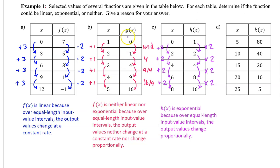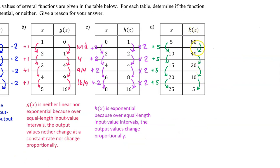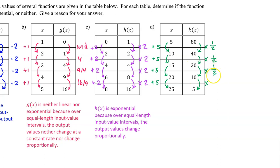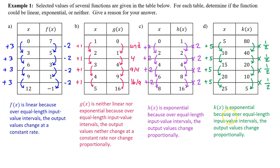By the way, on Part B the function was g of x and I mistakenly said f of x — that would lose a point on the AP exam. For Part D, we have equal length input value intervals. The output values do not change at a constant rate, so k of x is not linear. Checking for a common ratio: 40 divided by 80 is 1 half, 20 divided by 40 is 1 half, 10 divided by 20 is 1 half, and 5 divided by 10 is 1 half. So k of x is exponential because over equal length input value intervals, the output values change proportionally.